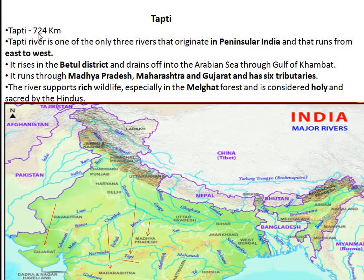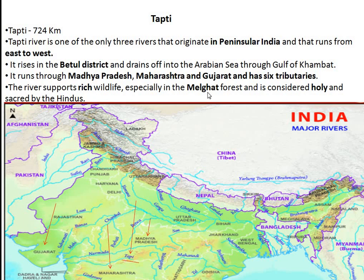Next is Tapti, which is 724 kilometers. Tapti river is one of only three rivers that originate in peninsular India and run from east to west, flowing towards the west side. It drains into the Arabian Sea through the Gulf of Khambhat. It runs through Madhya Pradesh, Maharashtra, and Gujarat and has six tributaries. It supports rich wildlife in the Melghat forest and is considered holy and sacred by Hindus.